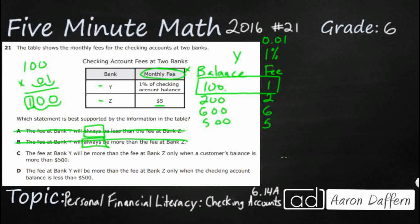The bank fee at Y will be more than the fee at Bank Z only when the customer's balance is more than $500. That's just what we were talking about. The bank fee at Y — that 1% — is only going to be more than Z when a customer's balance is more than $500. We figured out $500 was our tipping point, because $500 times 1% gets you exactly $5. So that looks like that's probably the answer.